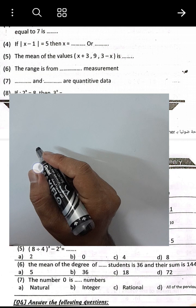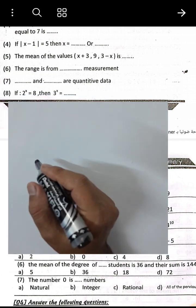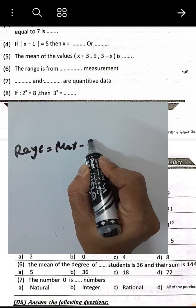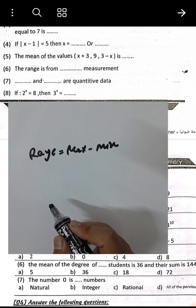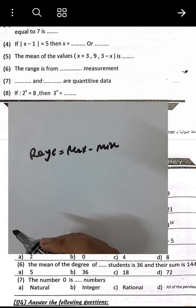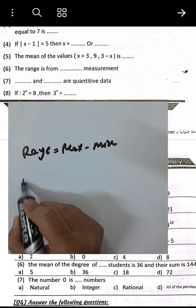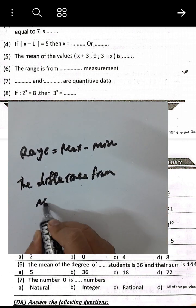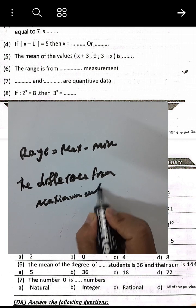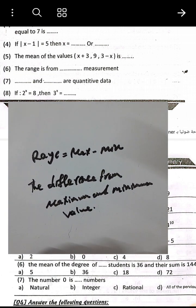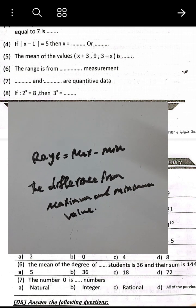Question number 6: The range is the difference between the maximum and minimum values — range equals maximum minus minimum.